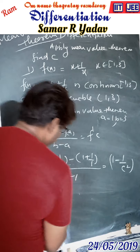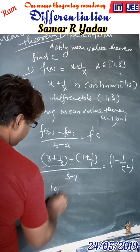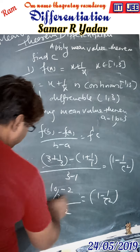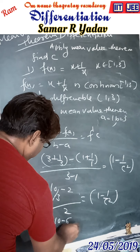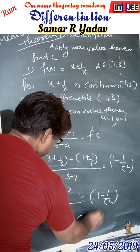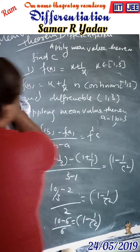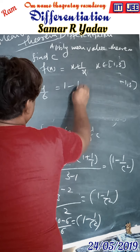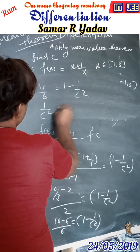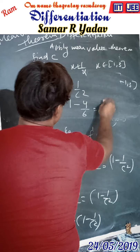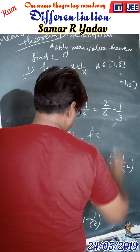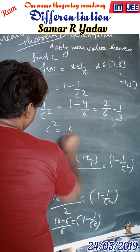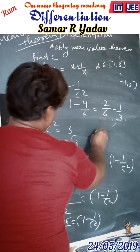Simplifying: (10/3 - 2) / 2 = 1 - 1/c². This gives (10 - 6) / 6 = 4/6 = 1 - 1/c². Therefore, 1/c² = 1 - 4/6 = 2/6 = 1/3.